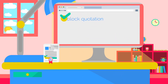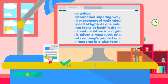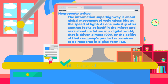Block quotations: if you wish to quote a passage that is more than four lines long, you should put that passage in a block quotation instead of using quotation marks. You must introduce the quote and then start it on a new line, indenting the entire quote by one inch. Example — Negroponte writes: 'The information superhighway is about the global movement of weightless bits at the speed of light. As one industry after another looks at itself in the mirror and asks about its future in a digital world, that future is driven almost 100% by the ability of that company's product or services to be rendered in digital form.' (p. 12)